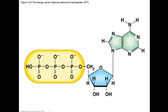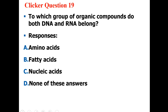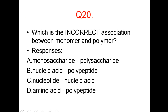Here is the structure of a nucleotide. Let us review. To which group of organic compounds do both DNA and RNA belong? Please choose the correct answer and write this answer down for the lecture quiz on Blackboard. Question 20: Which is the incorrect association between monomer and polymer? Choose the correct answer.